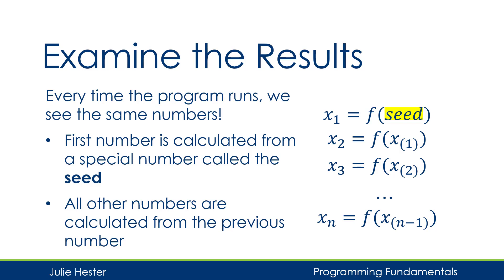We haven't been setting a seed value with our random number function, so we're always running it with an unset seed. Essentially we've set it to zero and we're always using the same seed, so we're always getting the same numbers.